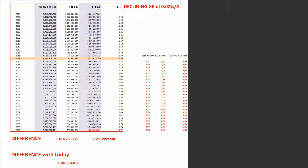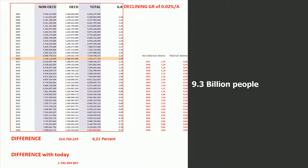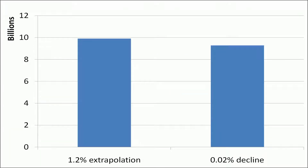I do this to determine whether the argument for energy efficiency really holds water. With the decline in growth model, we would have 9.3 billion people on the Earth by 2040, which is a difference of 614 million people, equal to 6.21%, compared with the 1.20% constant growth rate.